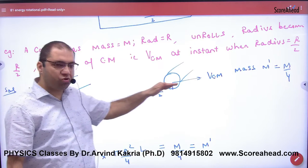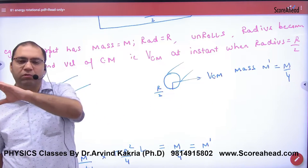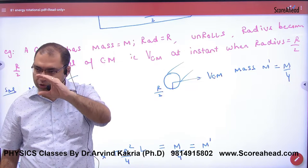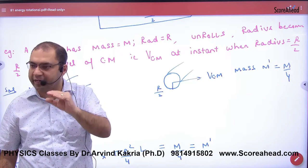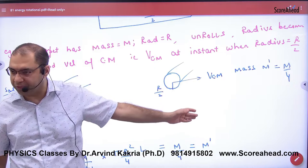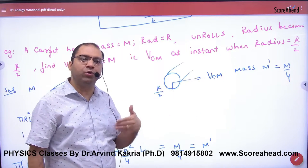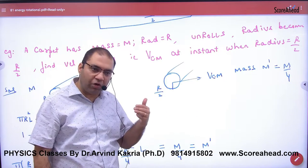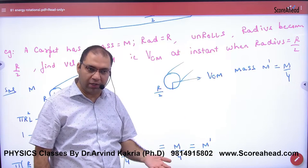Its center of mass is in translation motion. So its radius is small and is small. And at any instant, the radius is R by 2. When its radius is R by 2, what is the velocity of the center of mass in that instant? This is the question.